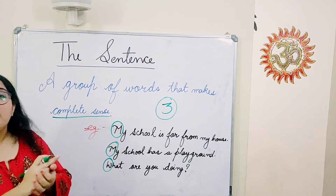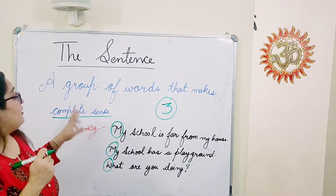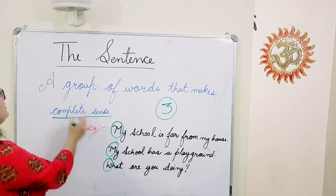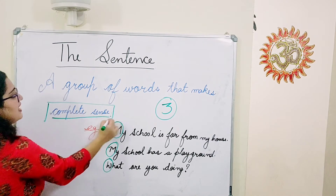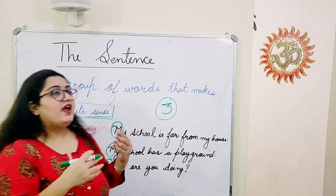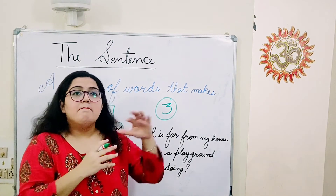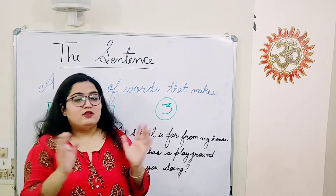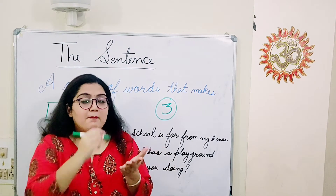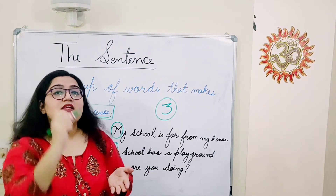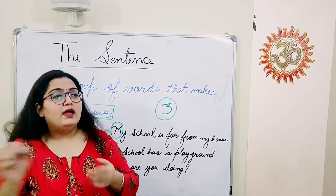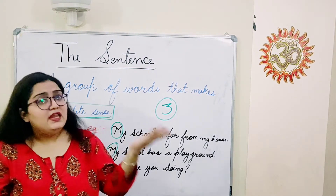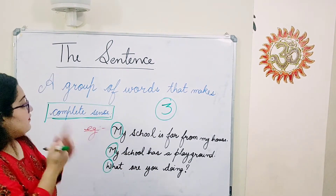The next big thing is, a sentence is only called a sentence when it makes complete sense — there should be some meaning. So if I just write two words, 'my window,' that doesn't make any sense and there is no conclusion coming out of that. But if I write 'there is a lizard on my window,' now this makes a complete sentence because it has some meaning to it.